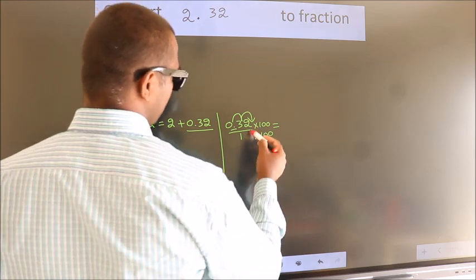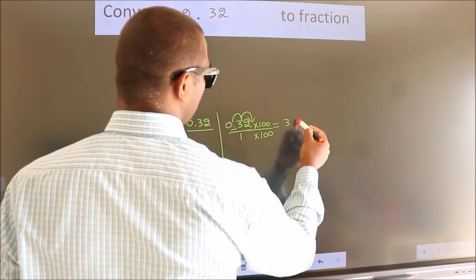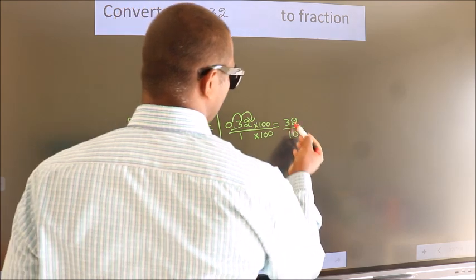Next, 0.32 into 100 is 32. 1 into 100 is 100.